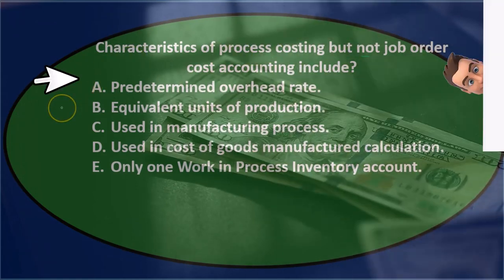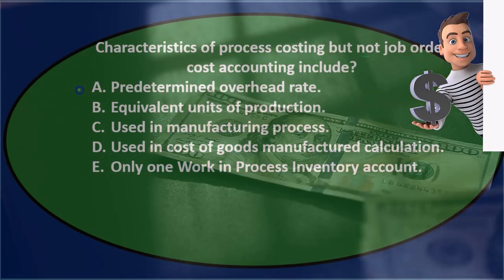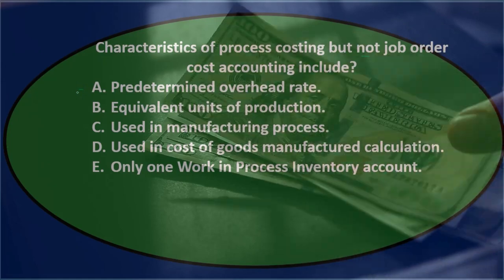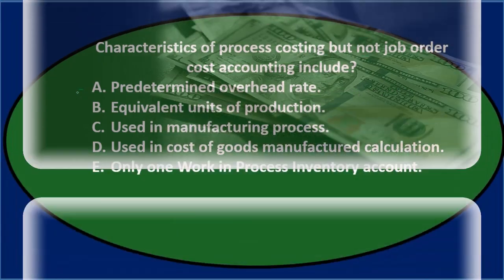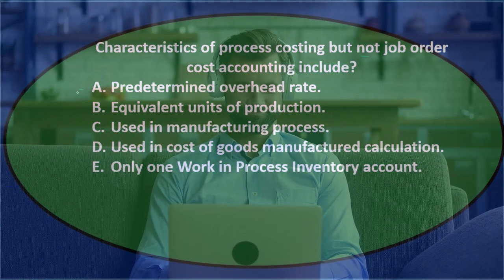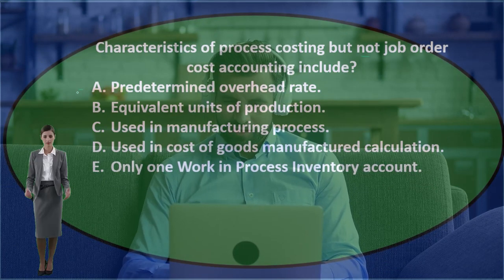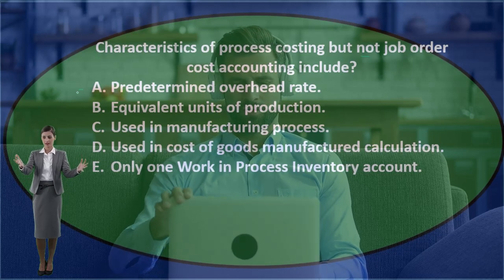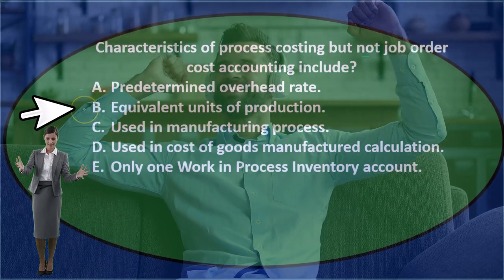Considering option A, the predetermined overhead rate — this deals with the application of overhead. We might use it in a process cost system, but we're not sure if it's used in both systems. It's an item used to help allocate overhead, but we might be confused about whether it applies to one or both systems, so let's keep that one for now.